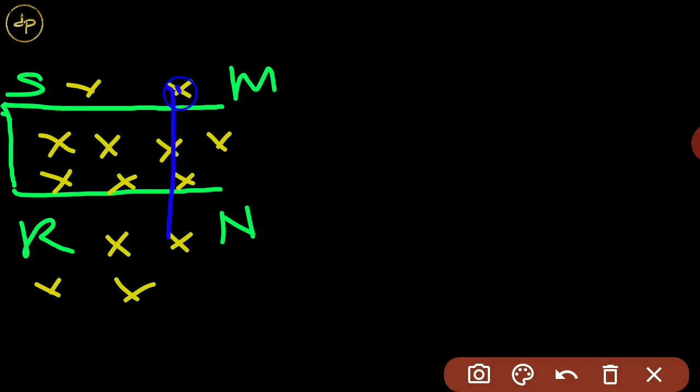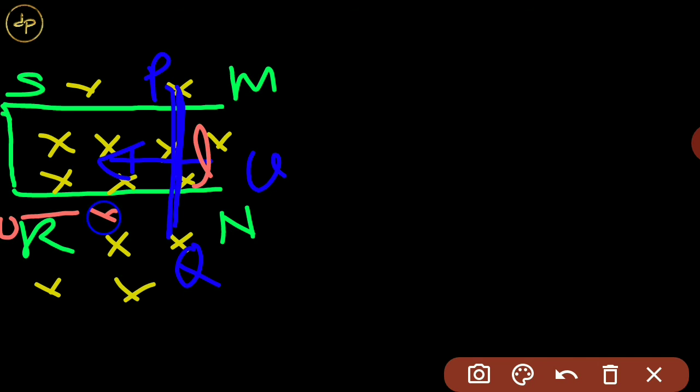This is the conductor PQ, moving in this direction with velocity V. If the length of the conductor is L, and this is the origin zero, and this distance is X, then the initial flux is equal to magnetic field B dot area. So the area of this loop PSRQ will be LX.